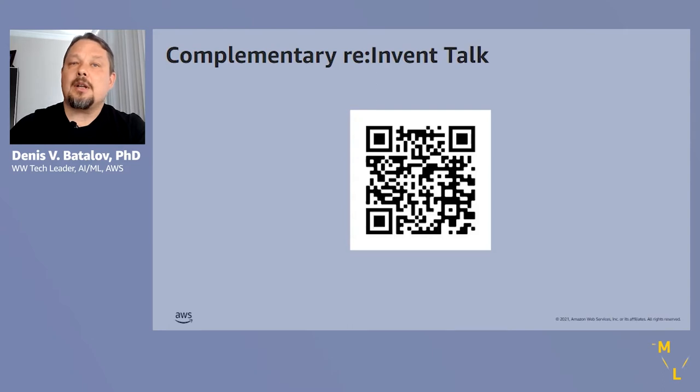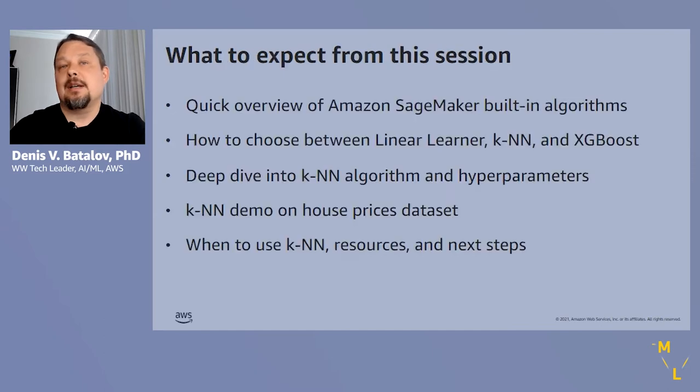If you've been watching machine learning talks from last re:Invent, you might remember seeing a session with a similar title. Scan the QR code to watch that session on YouTube. Today's session is not a repeat. In fact, you can view the re:Invent session as complimentary because in it we covered the two most popular built-in algorithms in SageMaker, namely image classification and XGBoost. In today's session, we will dive deep into a different but very popular built-in algorithm, namely k-nearest neighbors or KNN.